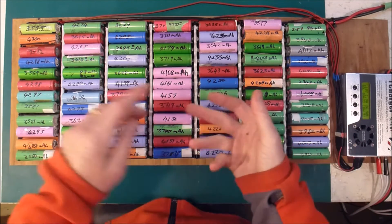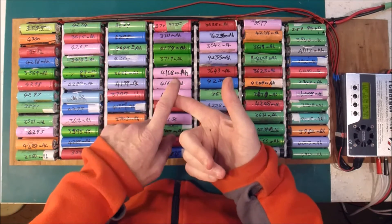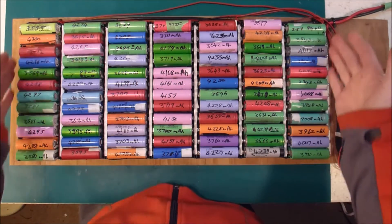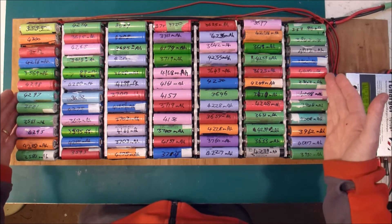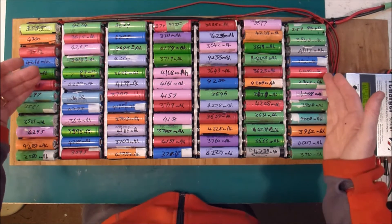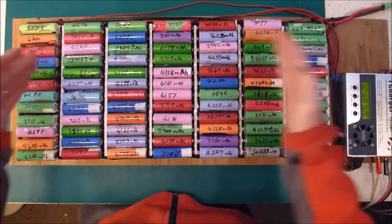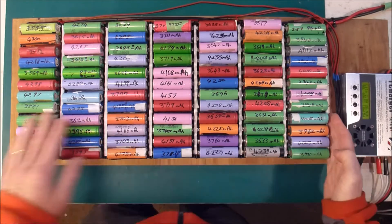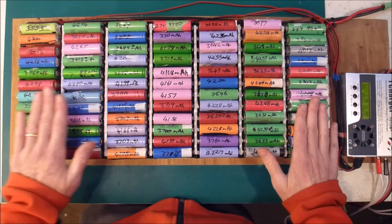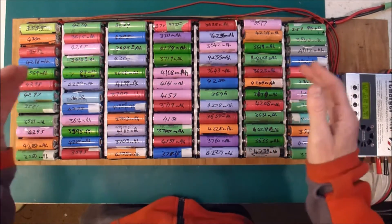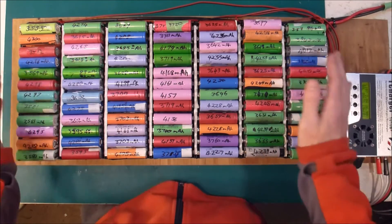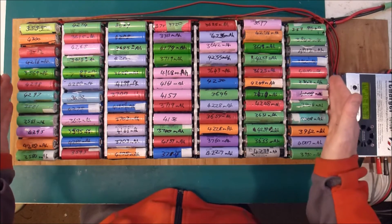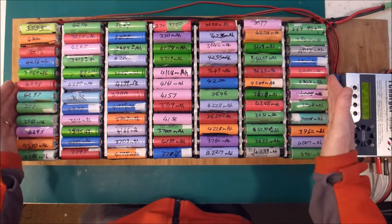And then the other issue is overcharge, and I've got my solar charge controller set to only charge up to 28 volts across the seven groups, which is effectively 4 volts per group, which is nice and low, and it won't go above 28. So that should cover the overcharging issue.